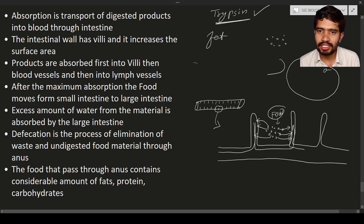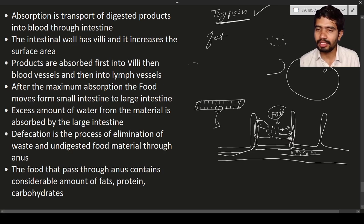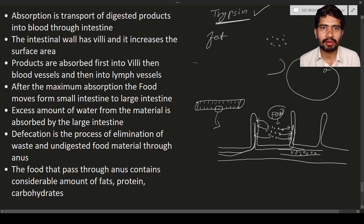The nutrients are taken up by the villi and mixed into the blood vessels. The blood vessels then carry all the nutrients from the small intestine throughout the body. This nutrient-containing blood is supplied to the body for growth and repair.